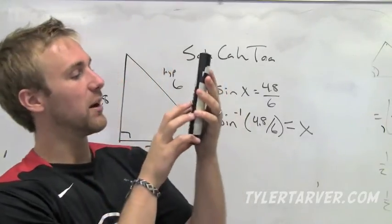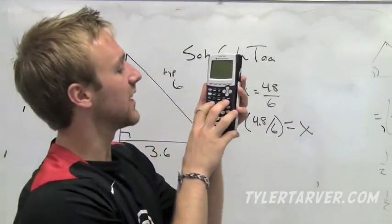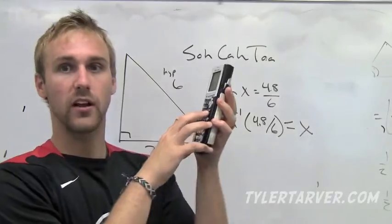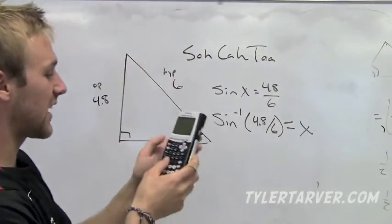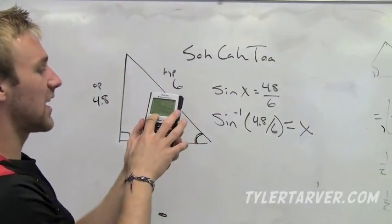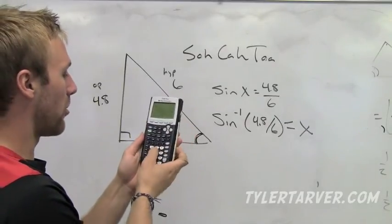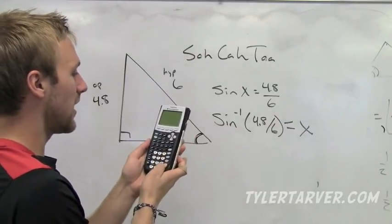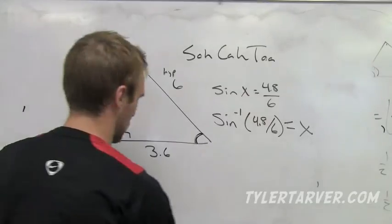All you have to do to do the inverse is hit second and then one of those buttons. If you'll see it in the blue above it, mine's blue, yours might not be, it says sine of negative one. That's inverse sine. All you do is you get second, sine, it'll pop up sine negative one parenthesis. We do 4.8 divided by 6, enter.